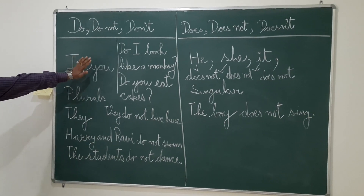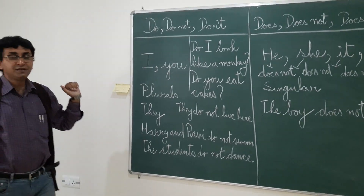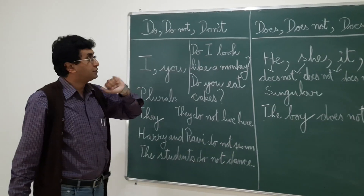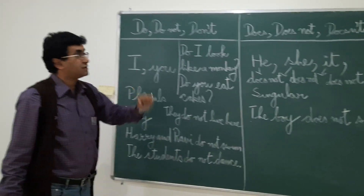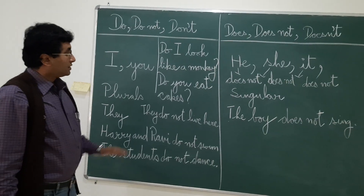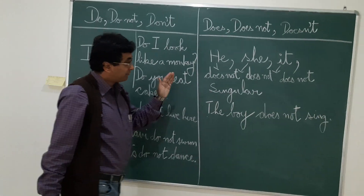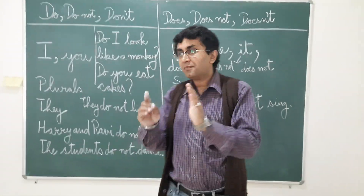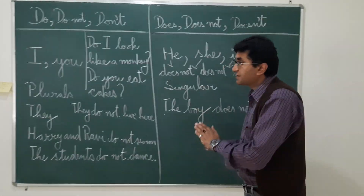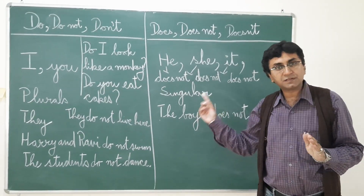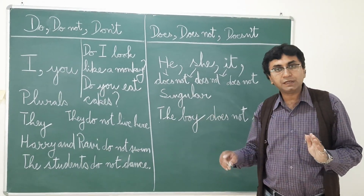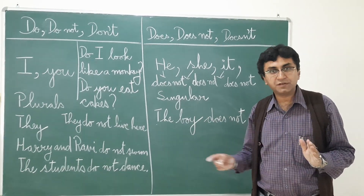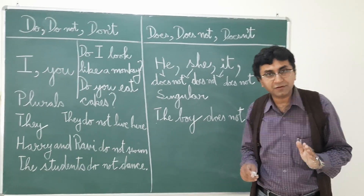So I hope this makes clear the usage of do, do not, don't, and does not, doesn't. We will continue with more usages of this and more usages of plurals, singulars, and apostrophes in the next videos to come. Thank you very much.